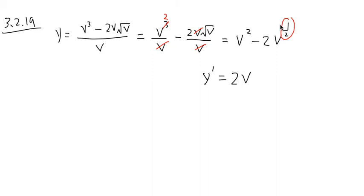once again, circle the exponent, bring it to the front, and then minus 1 to that. And negative 2 times one-half is just negative 1, and we have φ to the one-half minus 1, which is negative one-half power.